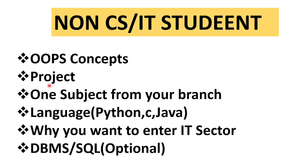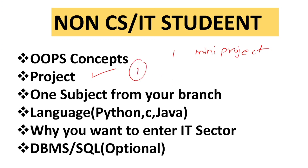For non-CSIT students, you must have completed at least one project — one mini project at least — because they will definitely ask you to tell them about a project you have completed, even if you are not from a CSIT background. For electrical and electronics diploma students, you have the benefit of a project already completed in your diploma. For civil and mechanical, you need to do at least one mini project.